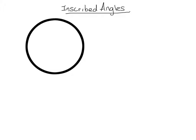An inscribed angle has a vertex on the circle and the sides of that angle are chords. So right here we have an inscribed angle because the angle is on the circle and it is made up of two chords.